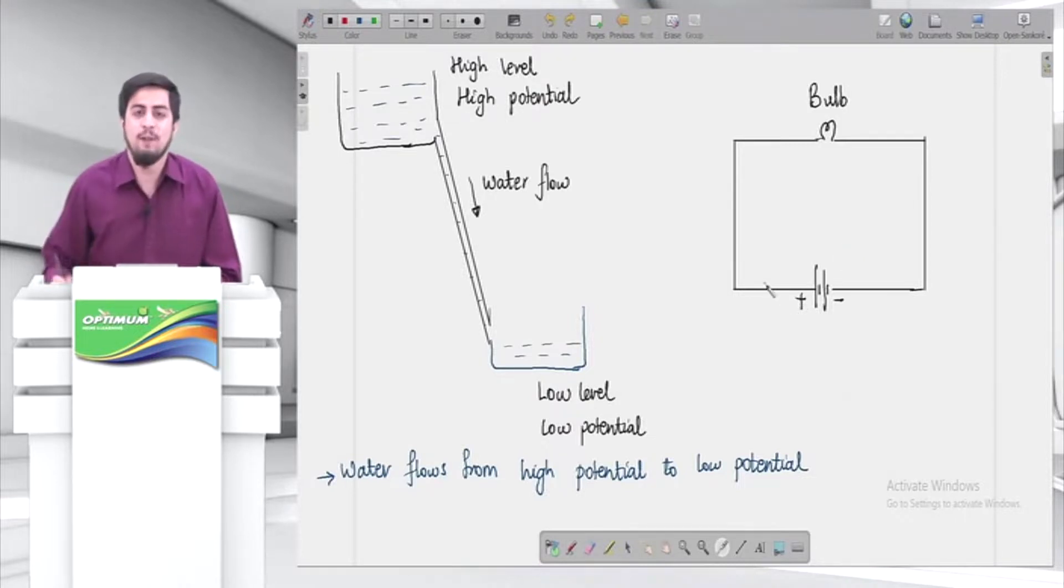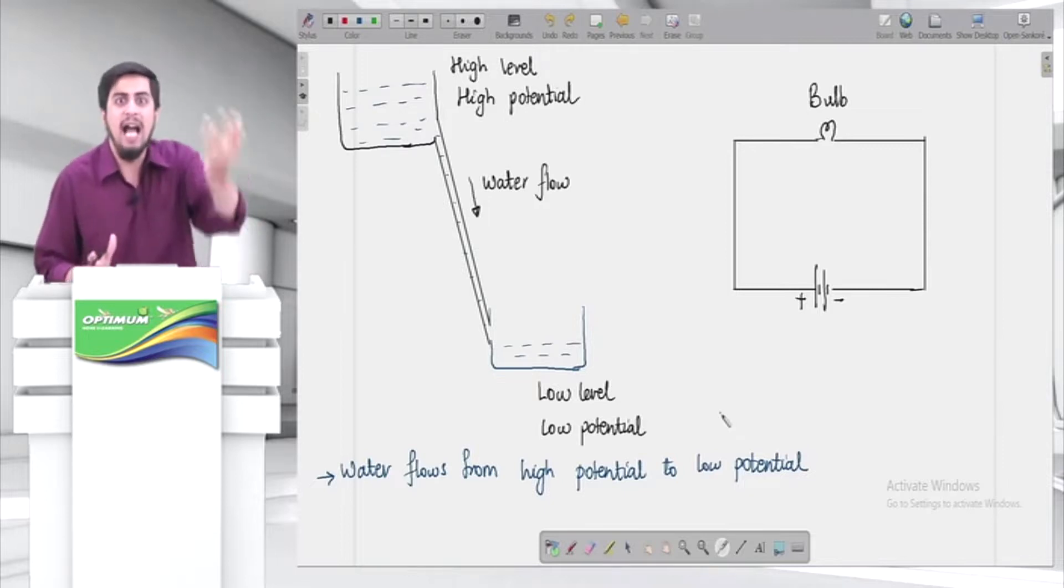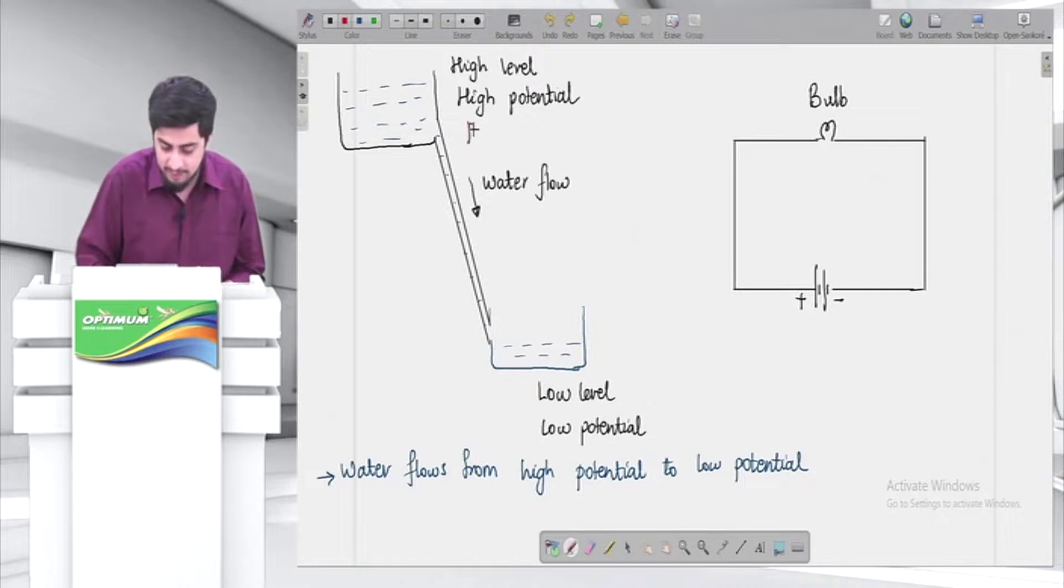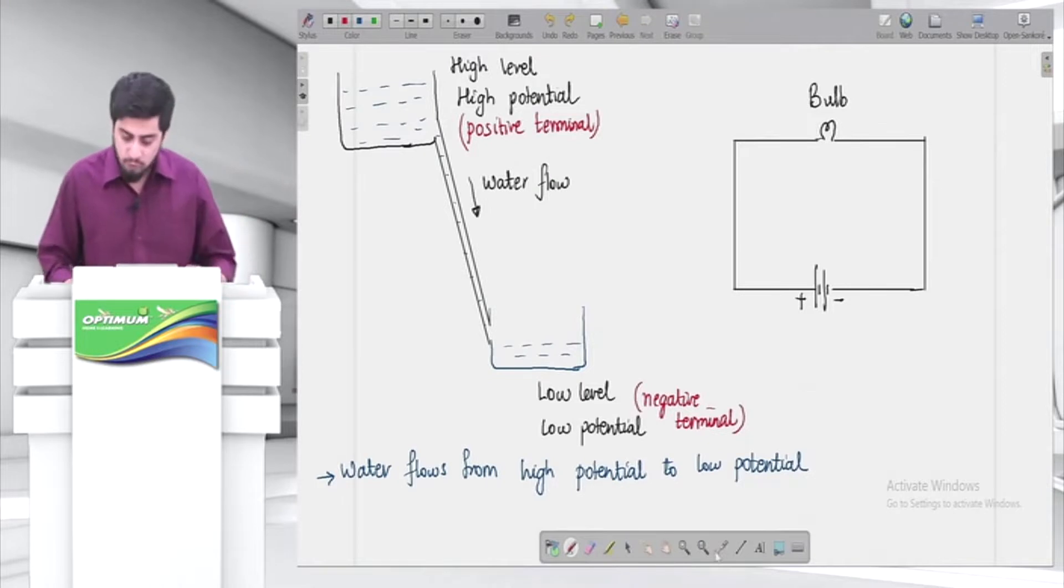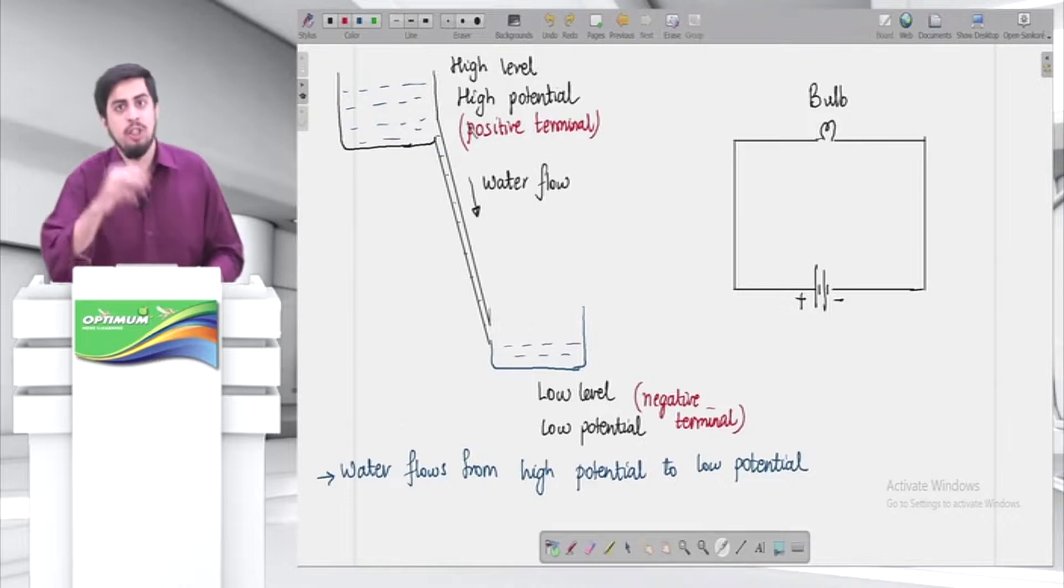So guys, if you have this electric circuit and you have a battery in this electric circuit, what will happen? Current will start flowing in this electric circuit. Now friends, just imagine like this, ke high level, low level. High means high, high means positive. So this can be treated as this is the positive terminal. Or low matlab niche, niche matlab negative. So I can call this as a negative terminal.